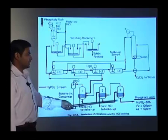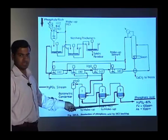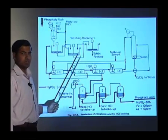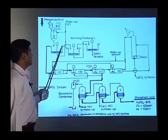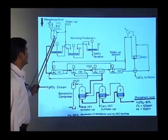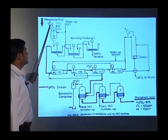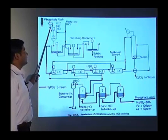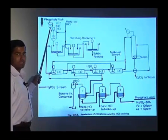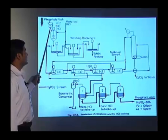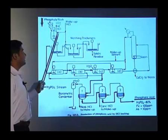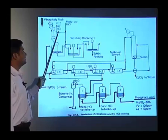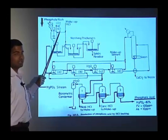Now we will see the Phosphoric Acid Manufacturing. This is the PFD for Phosphoric Acid Manufacturing. We have the phosphate rock, which we grind to 20 mesh grain. Then we are adding the hydrochloric acid.